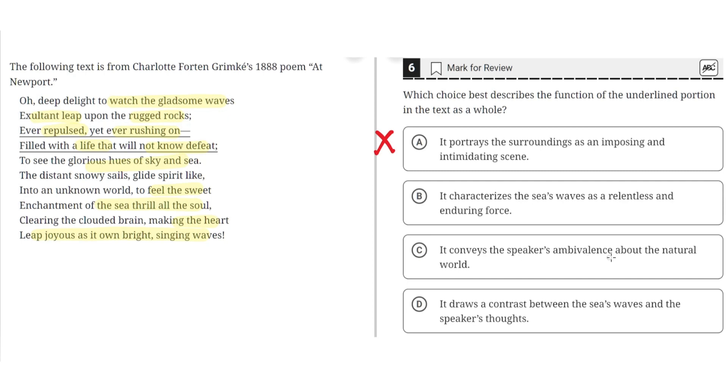C, it conveys the speaker's ambivalence about the natural world. This is incorrect because the two sentences describe the waves, not the speaker's feelings one way or another toward the natural world. So C is incorrect.